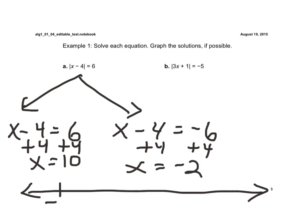And if we were to graph these, as they ask, we'd graph it on a number line. A negative 2 would be here, I'm going to put 0 in, and then 10 here. And all we would do is put dots on the negative 2 and the 10.